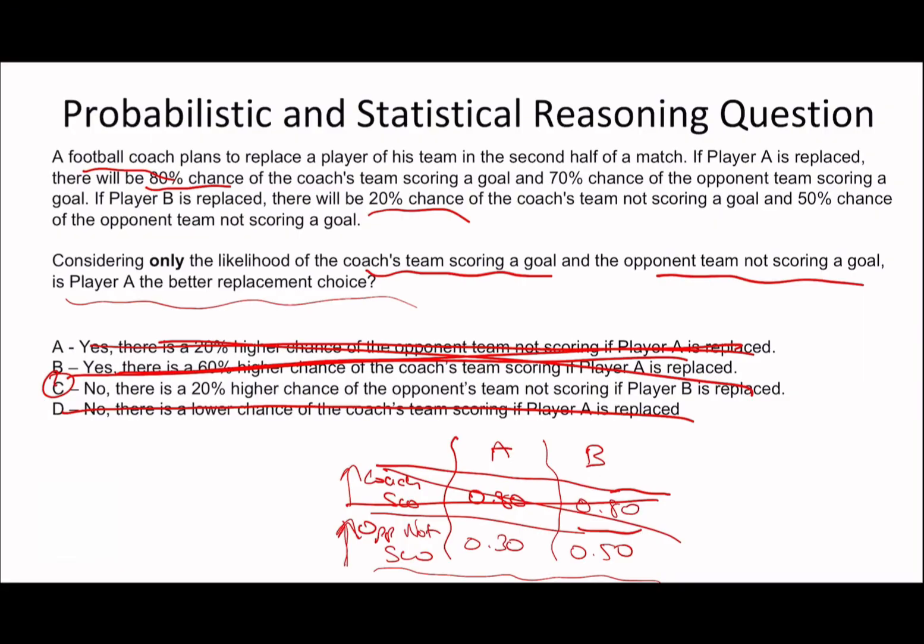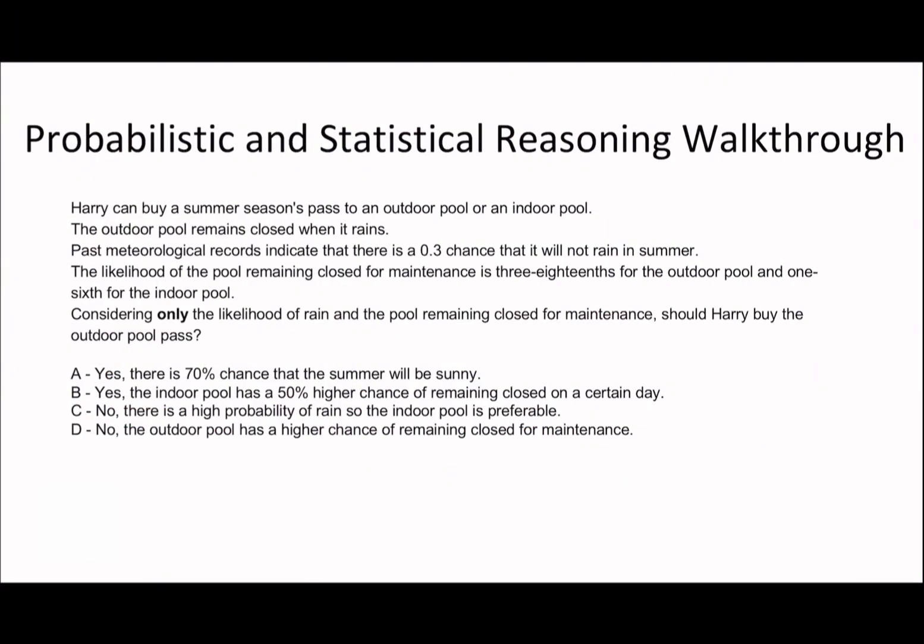So for that reason, as soon as I saw these values, I could have ruled out the fact that it can't be player A is a better replacement choice, because you can see B has a greater chance of the opponent team not scoring. And then based off the other options, C is going to be the right one. So that's just a little kind of tip or trick, I guess, as such.